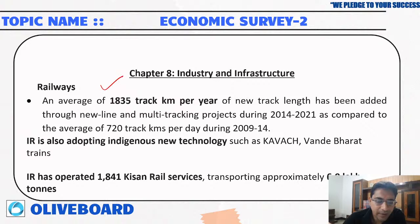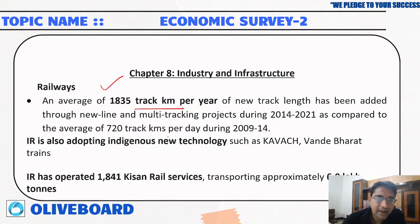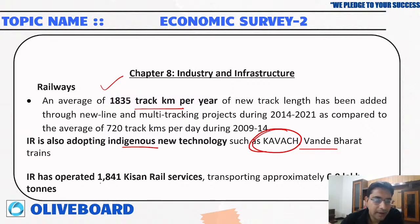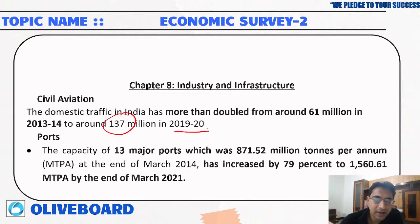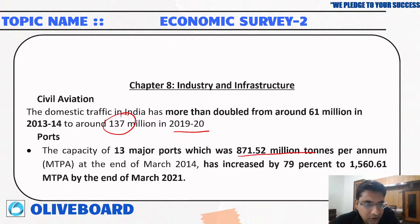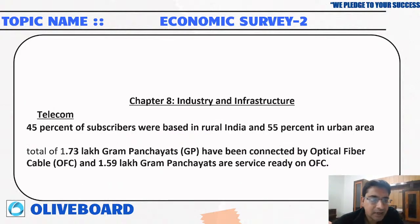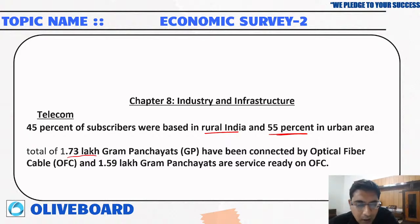Indian Railways has also seen huge improvement, with an average of 1,835 track kilometers being laid per year. Indian Railways is adopting indigenous technologies such as Kavach and the Vande Bharat train. Indian Railways operated 1,841 Kisan Rail services carrying approximately 6.0 lakh tons of goods. Under civil aviation, domestic traffic has grown — the 2019-20 data shows 137 million passengers. India has 13 major ports which carry around 871 million tons of goods. In telecom, a total of 1.73 lakh gram panchayats are connected by optical fiber cable.